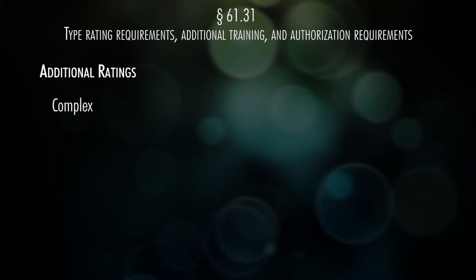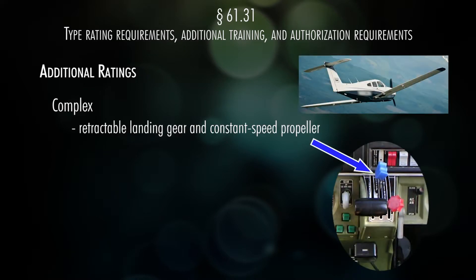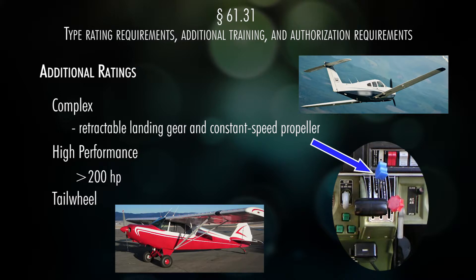There are some other certifications and endorsements you need. One is for a complex airplane — retractable gear and a constant speed prop — which you'll need for commercial training. You'll also need a high-performance endorsement for anything over 200 horsepower. And if you want to fly tailwheel airplanes, that's also another endorsement.